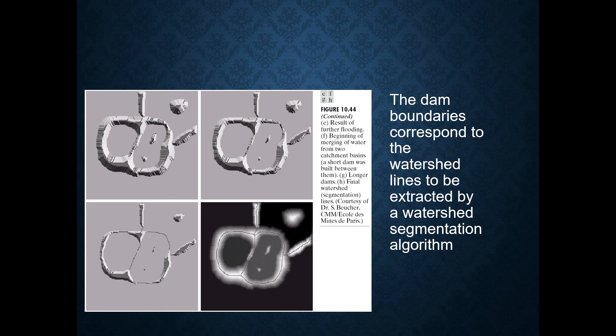The dam boundaries correspond to the watershed lines to be extracted by watershed segmentation algorithm. In this image, we can see that figure 10.44 point A is the result of further flooding. The next one is beginning of merging of water from two catchment basins, so a short dam is being built between them. Later on, we need to build a longer dam to stop the flow of water.